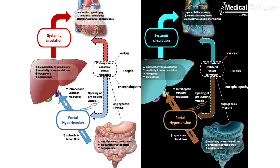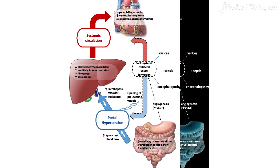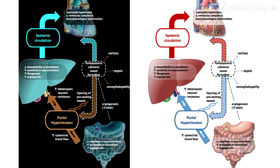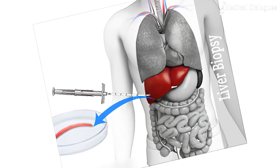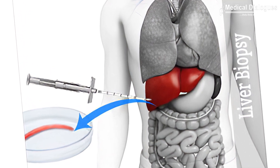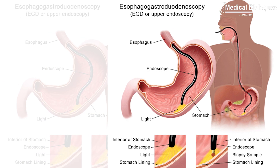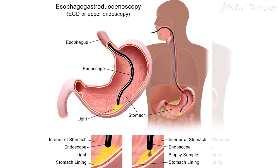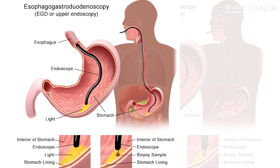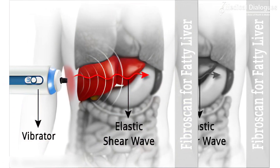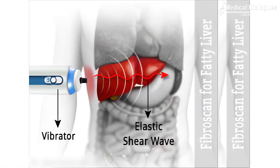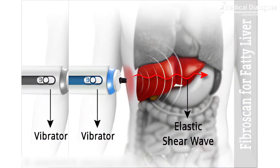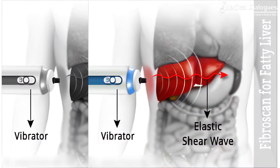Portal hypertension is one of the most important complications of chronic liver disease, and its early recognition is of paramount importance. Though liver biopsy remains the gold standard for diagnosing liver fibrosis, and upper GI endoscopy plays an equally important role in diagnosing different findings of portal hypertension, various non-invasive methods are cropping up, like the FibroScan, which are now being increasingly used to diagnose liver fibrosis.